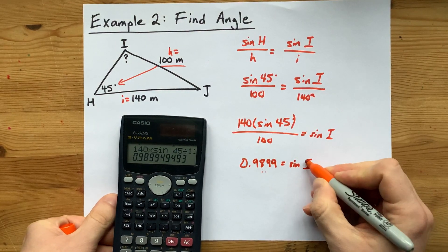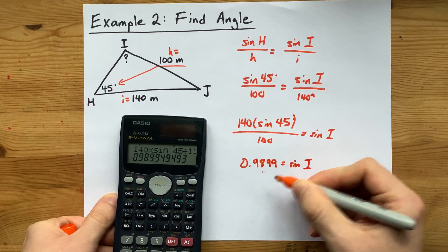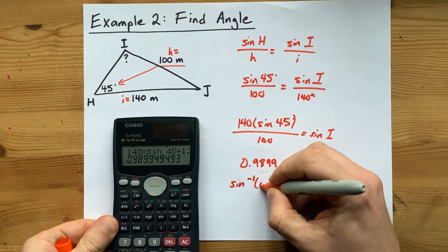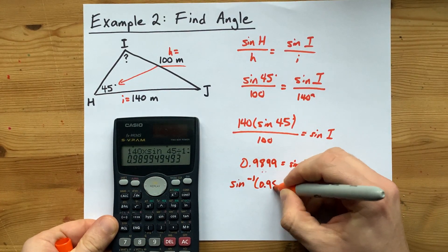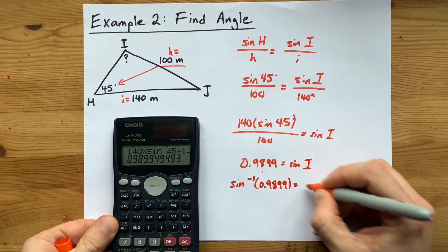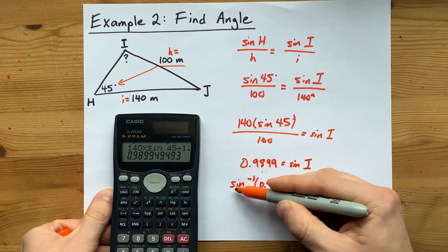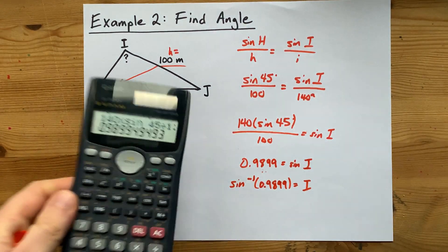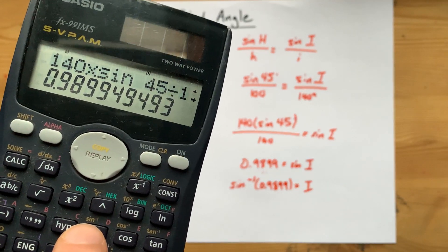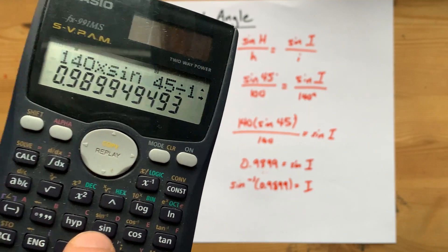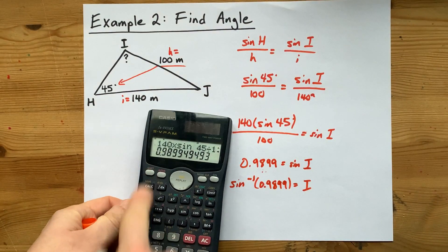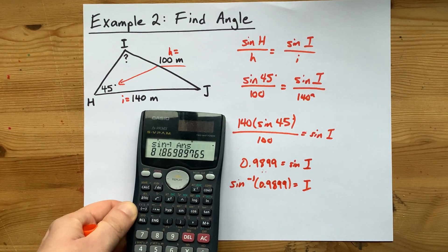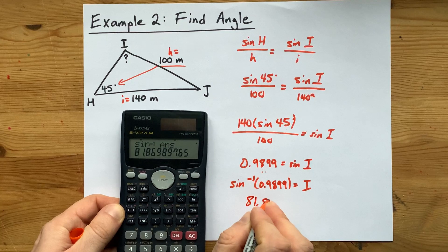Now to solve for capital I here, I need to undo sin. How do you undo the sine of something? Well we call it inverse sine. Some people call it sine to the negative one. Some people call it arc sine. But you can move sin to the other side by making it sin to the negative one. Now that's not a power, it's actually just a symbol or notation. And you'll note on your calculator above sin there is a sin to the negative one. That's undoing sine. So I'm going to press shift sin and use the previous answer. I'm not going to round. And I end up with 81.87 degrees.